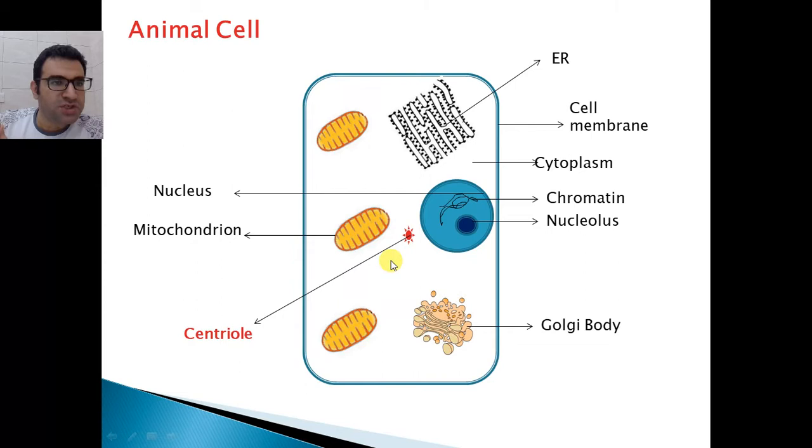Now, why does this centriole have a distinguished red color? It's the animal cell color to tell you that the centriole is exclusively found in animal cells. In plant cells, we don't see the centriole at all. It's found in animal cells only.